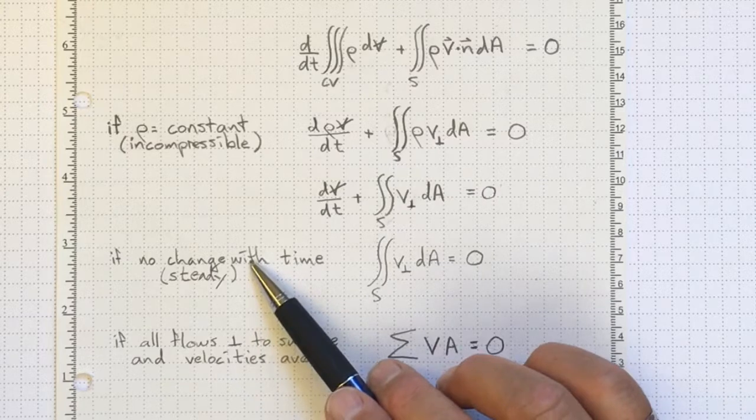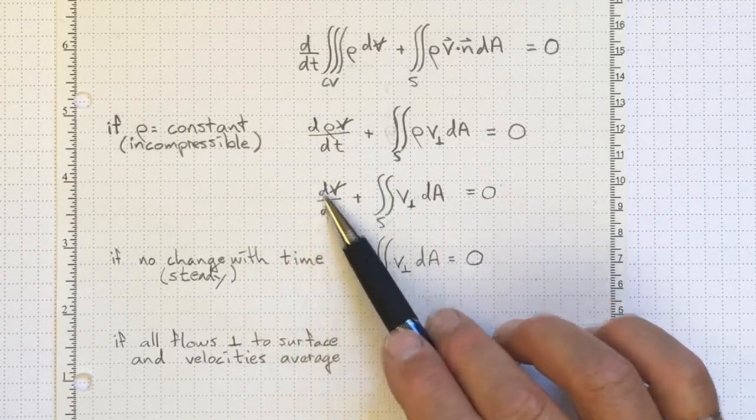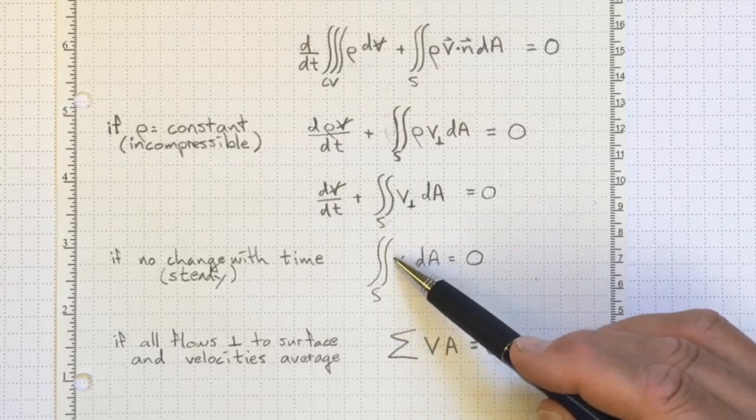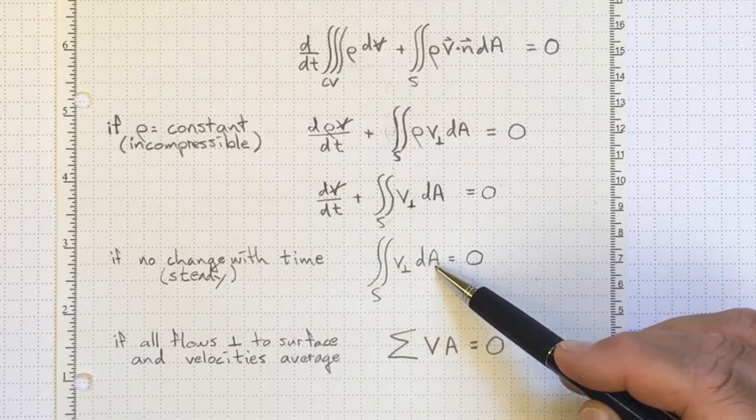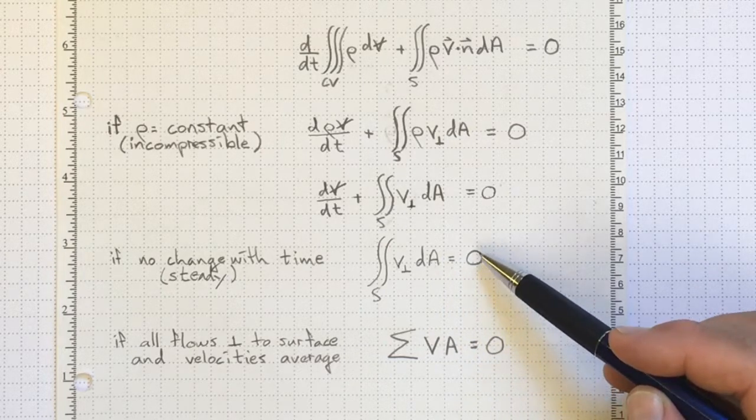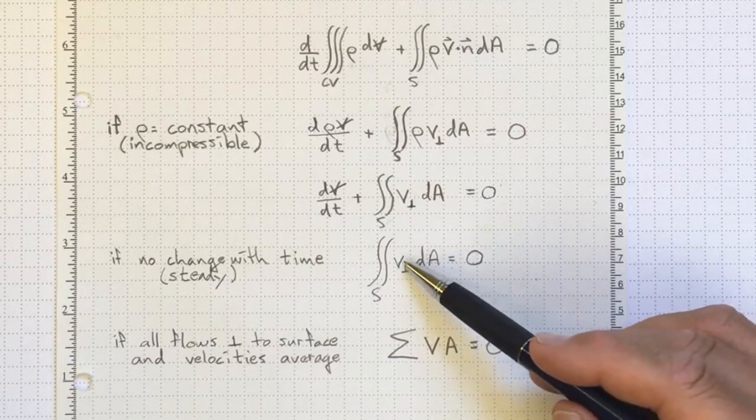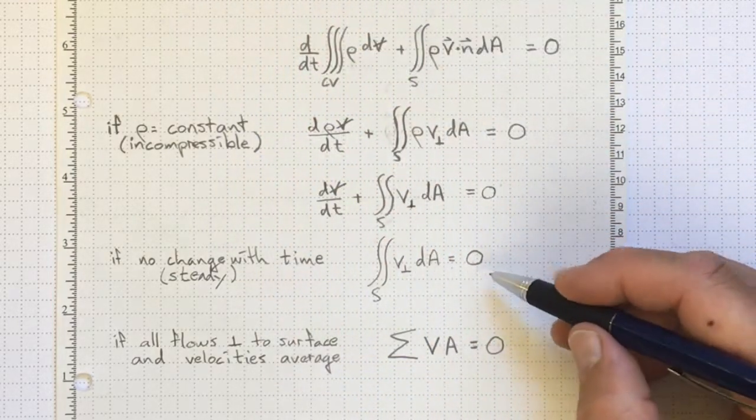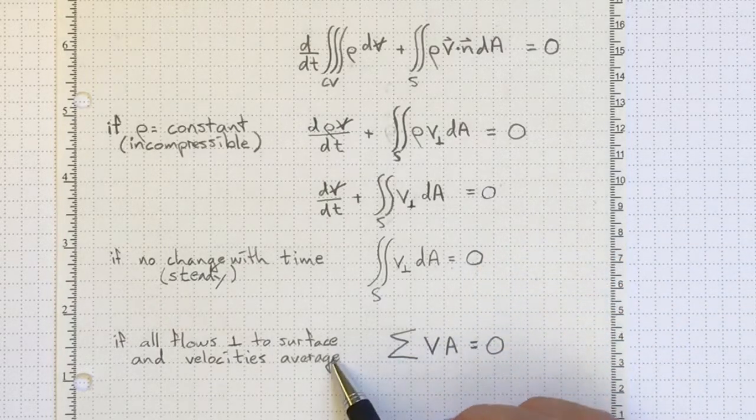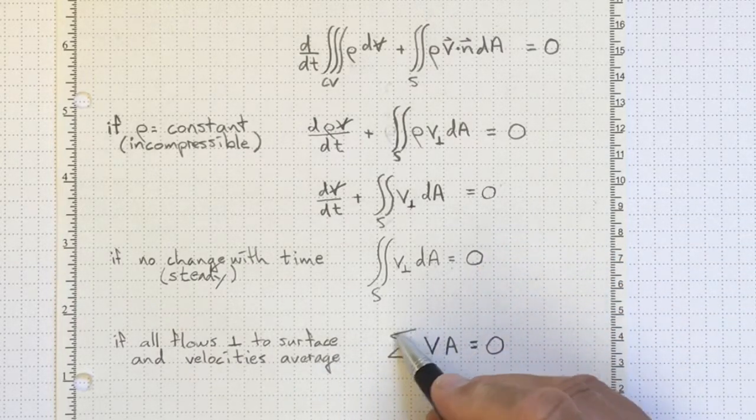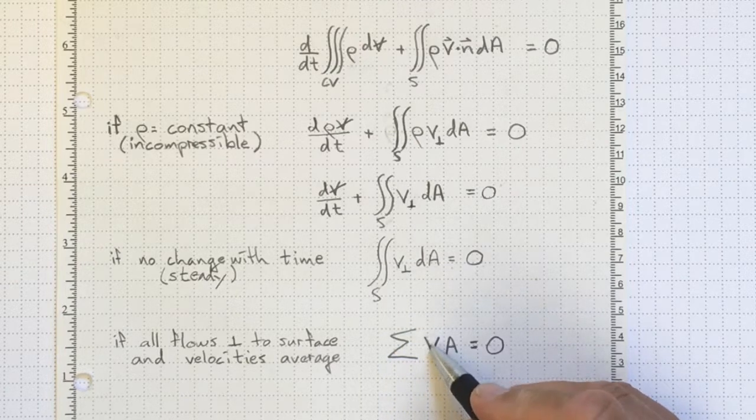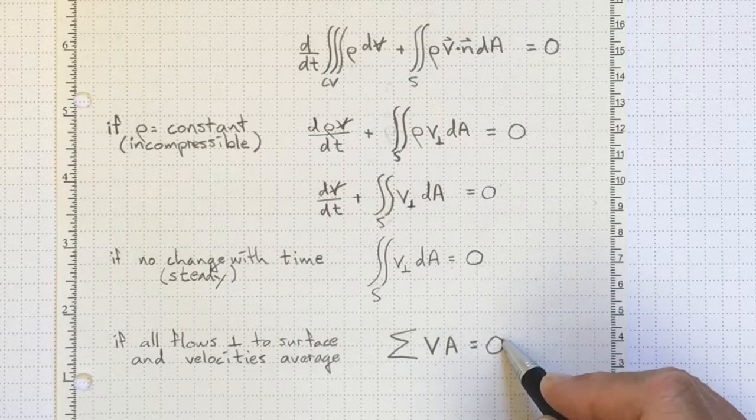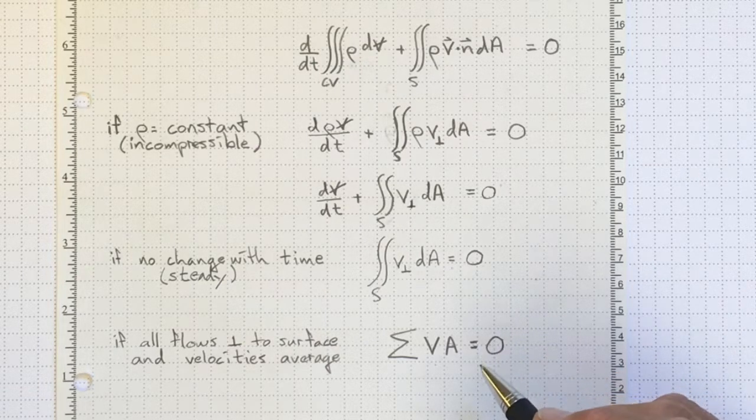If the flow is steady and not changing with time, then this term will go away. And we're just left with an integral over the surface area saying that the flows in and out must balance. And if all of the flows are perpendicular to our surface areas, because we've chosen to draw our control volume intelligently, and we use just average velocities, then we need to just look at all the inlets and outlets and look at the velocity times the area and make sure that that's equal to zero. Everything that goes in has to come out.